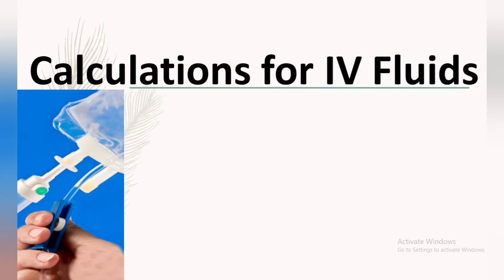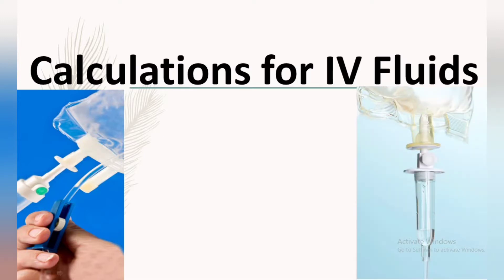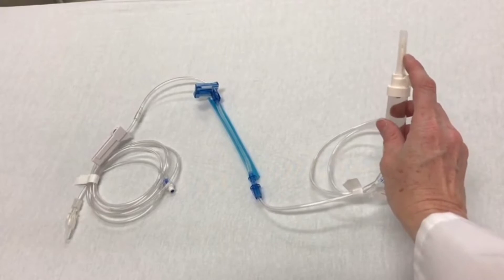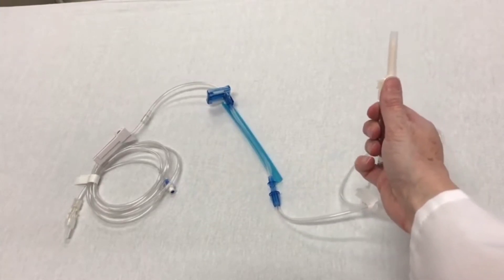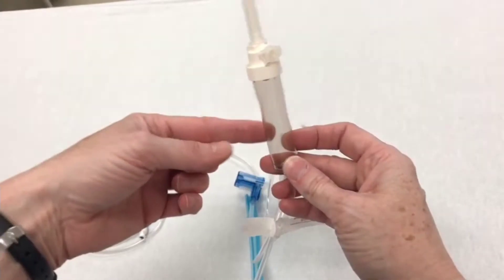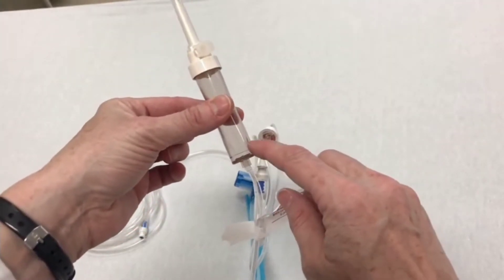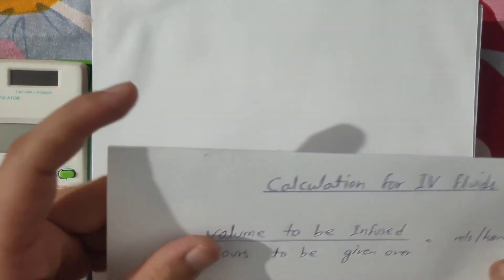On your left hand side you can see the regulator of the IV set which controls the flow rate of IV fluid in the patient, and on the right hand side you can see the fluid chamber which is helpful to see the fluid flow rate. This is the IV nozzle which connects to the IV fluid bottle. This is the air vent which allows air into the IV bottle so that flow is continuous, and this is the fluid chamber where we can inspect the drops of fluid.